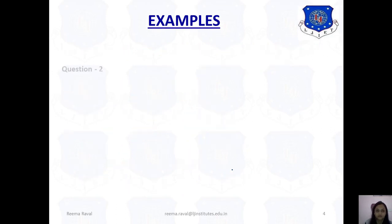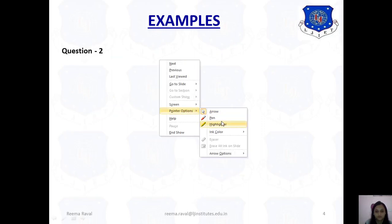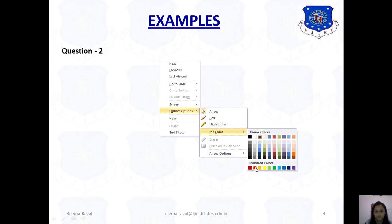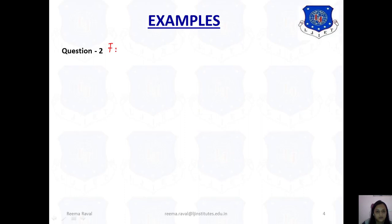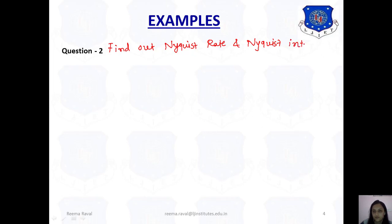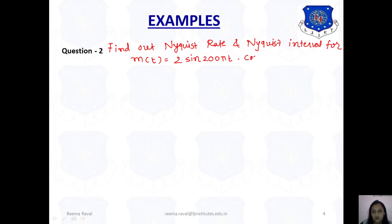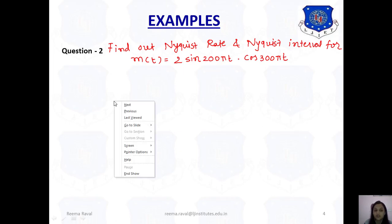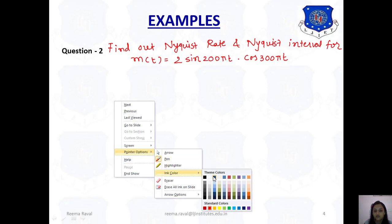Now let's see one more example. Find out the Nyquist rate and Nyquist interval for m(t) = 2 sin(200πt) × cos(300πt). This data is not in the form of addition; it is in the form of multiplication.